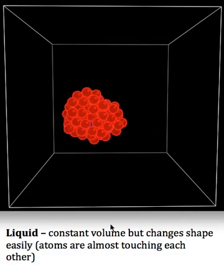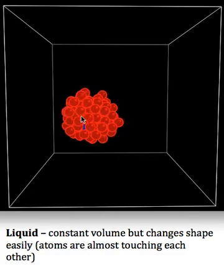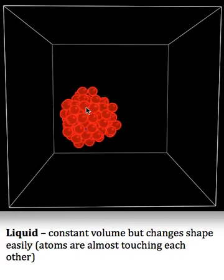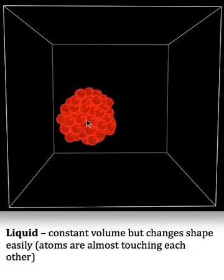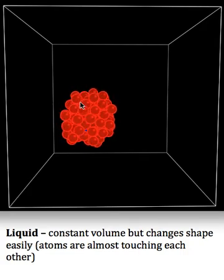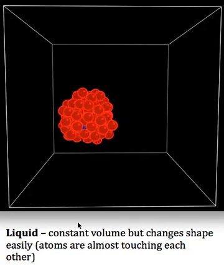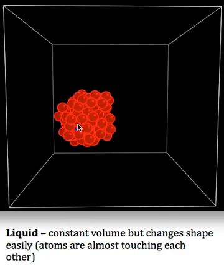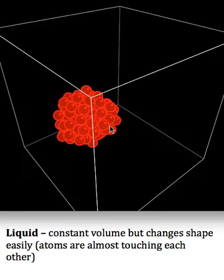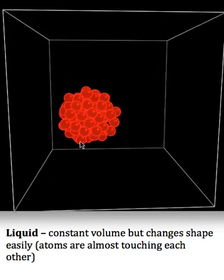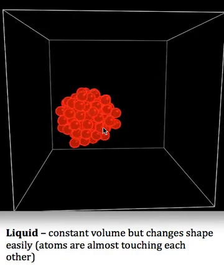A liquid phase also has a fixed volume. These things are really close to each other and the fact that they're basically touching each other keeps the volume close to the same as it was for the solid. But because it's not ordered in a crystal, there aren't rows of atoms here. The whole thing is fairly disordered. The shape can change very easily.